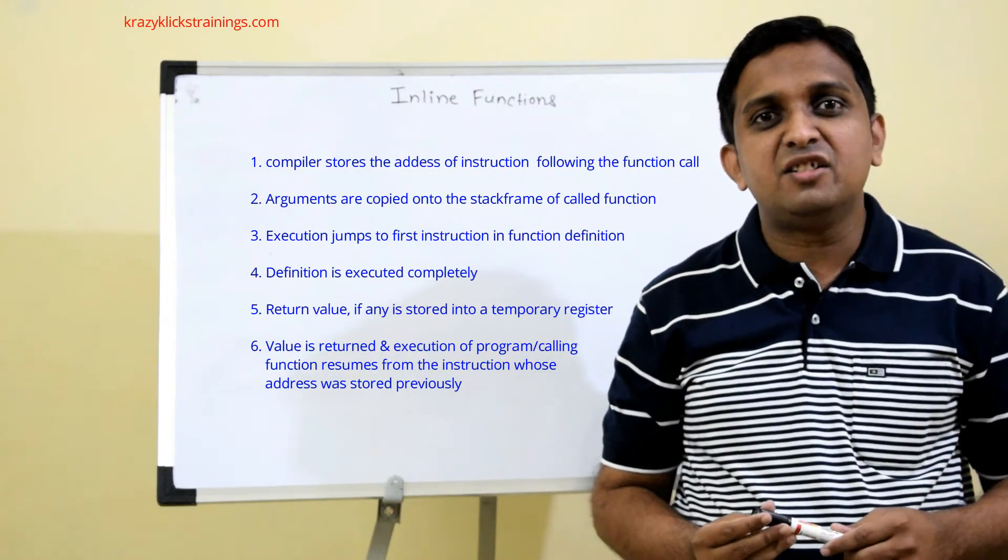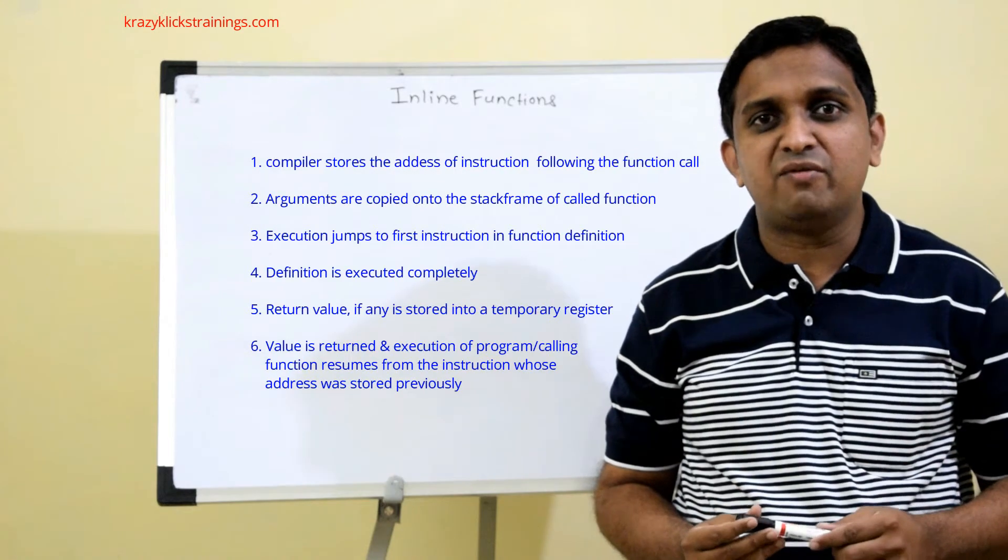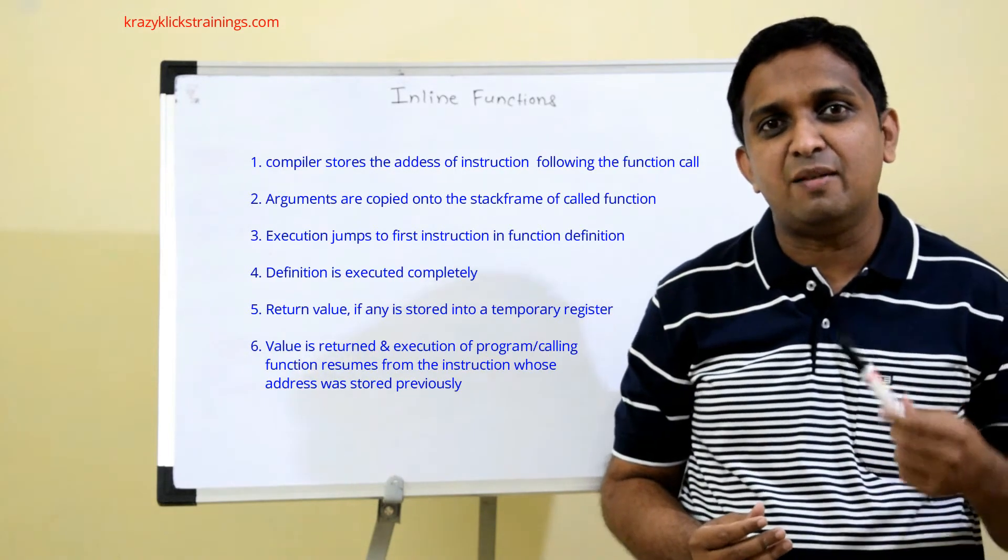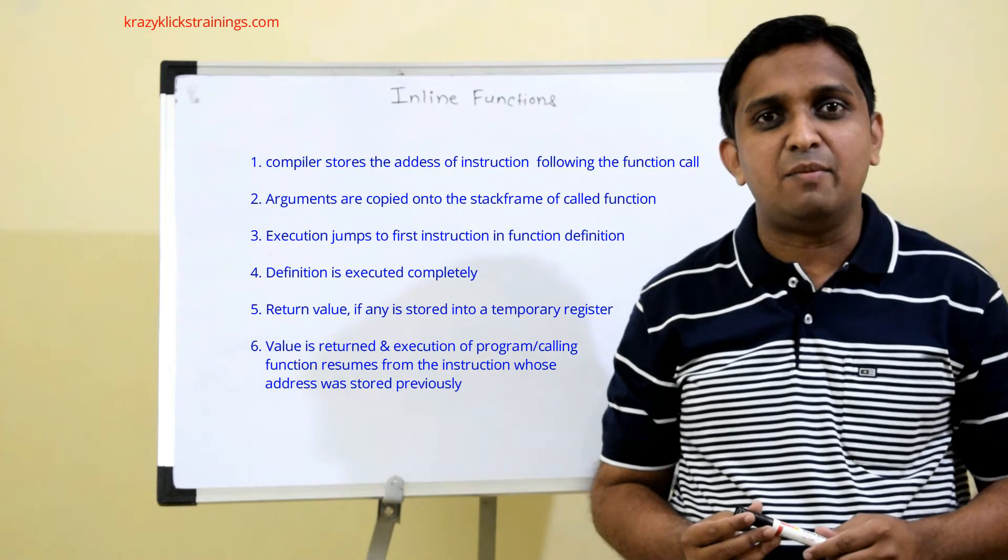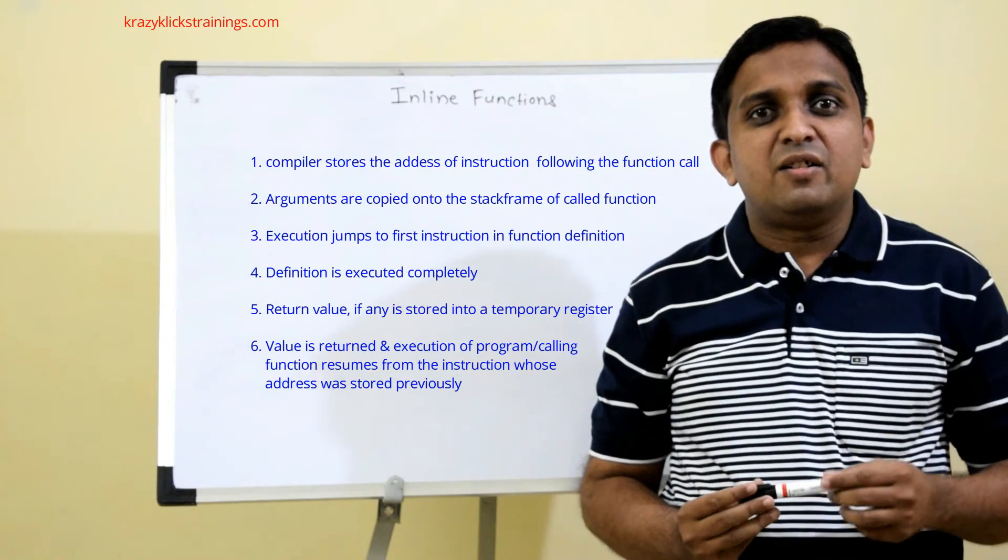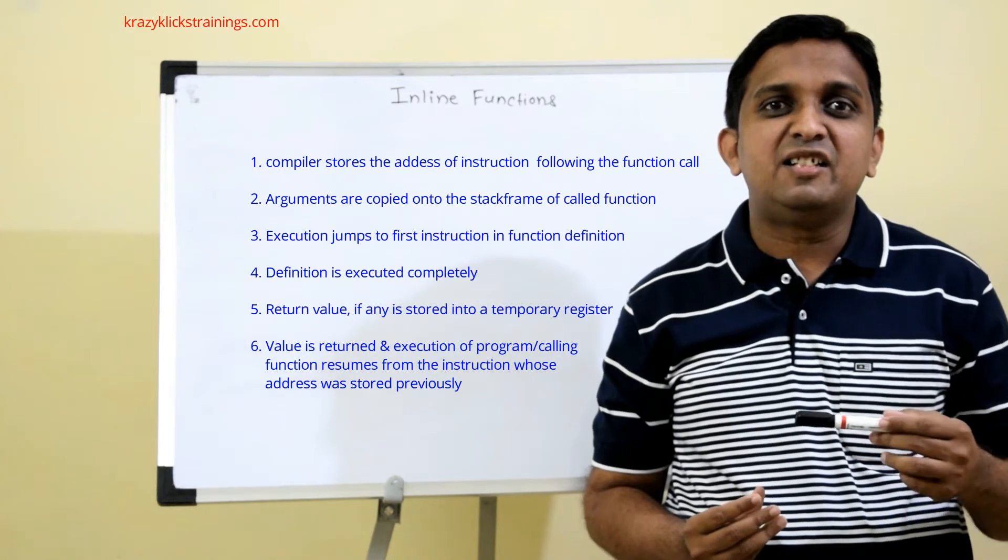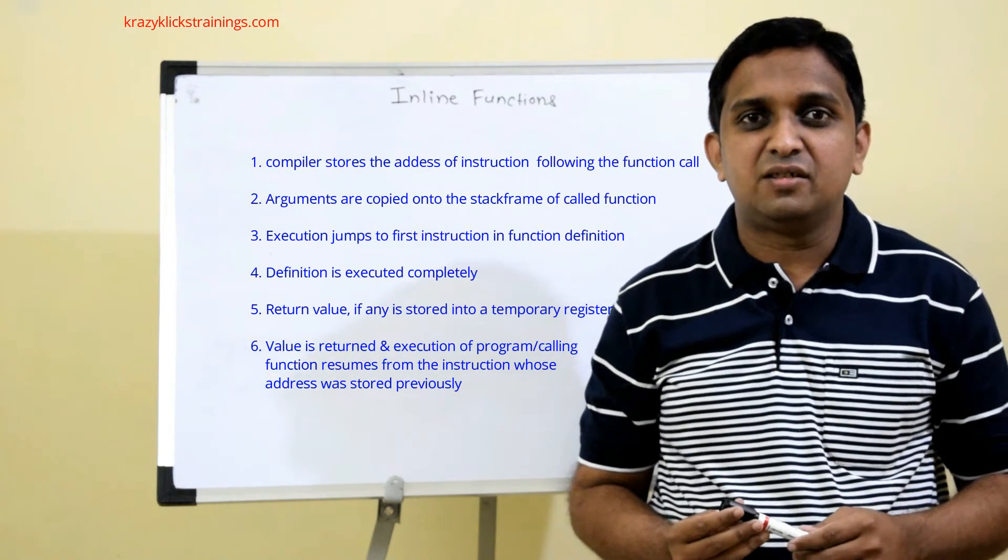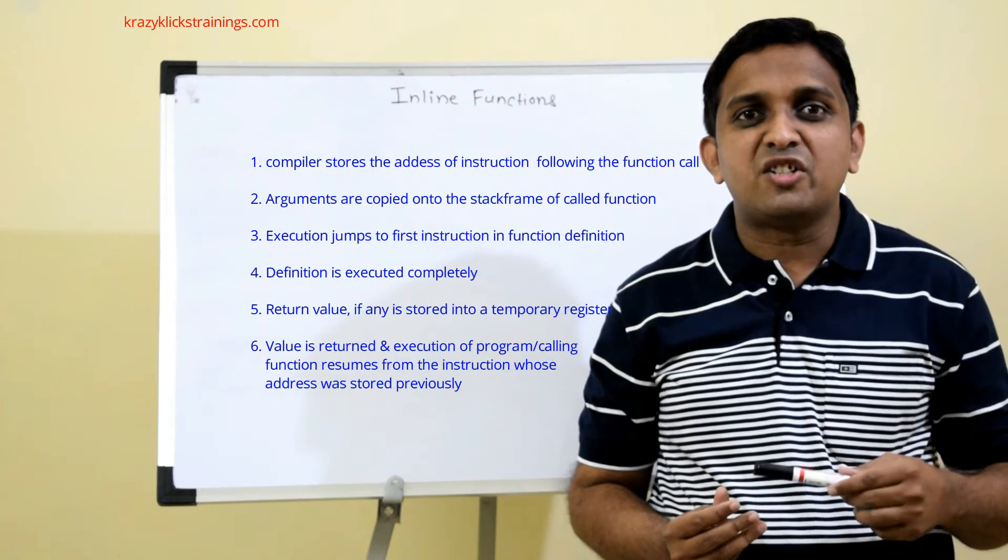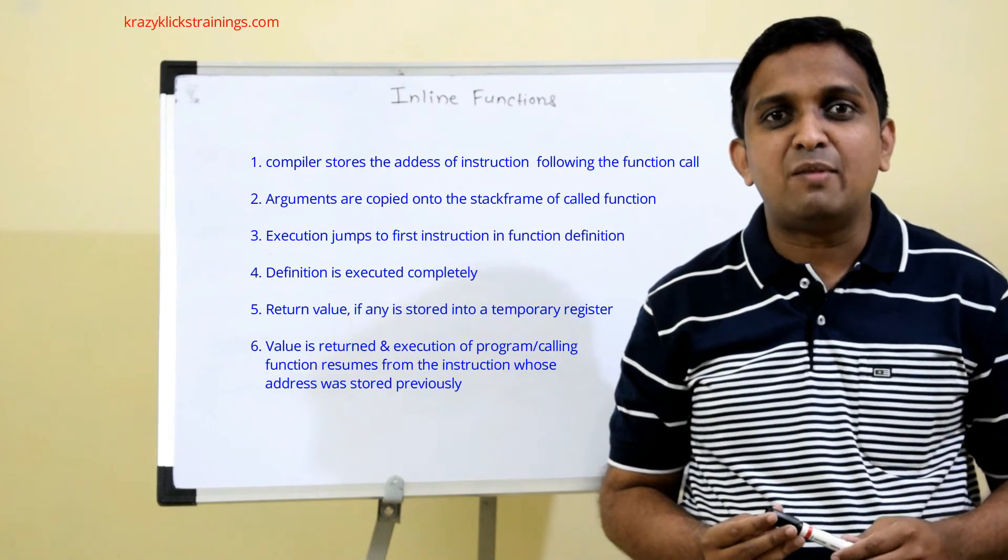Now if the function definition is very small for some particular function and if you are calling that function number of times in your program, then for each function call compiler has to follow these steps and these are called as function overheads. So because of this function overheads the execution of the program will be slower.